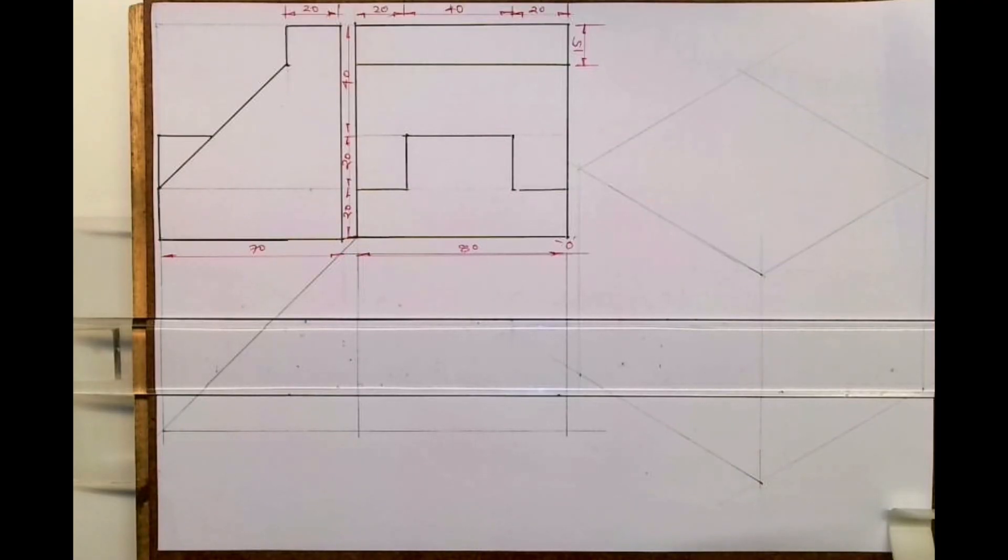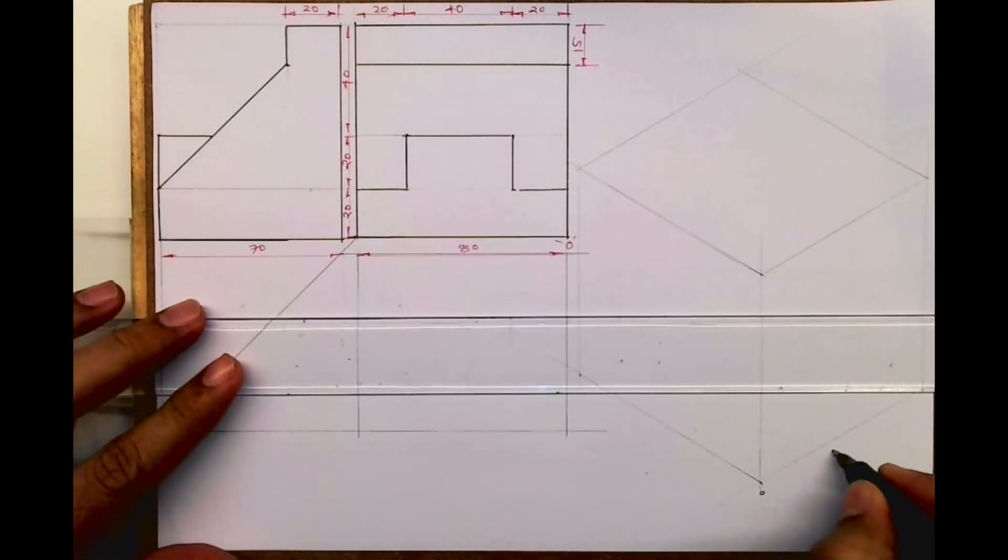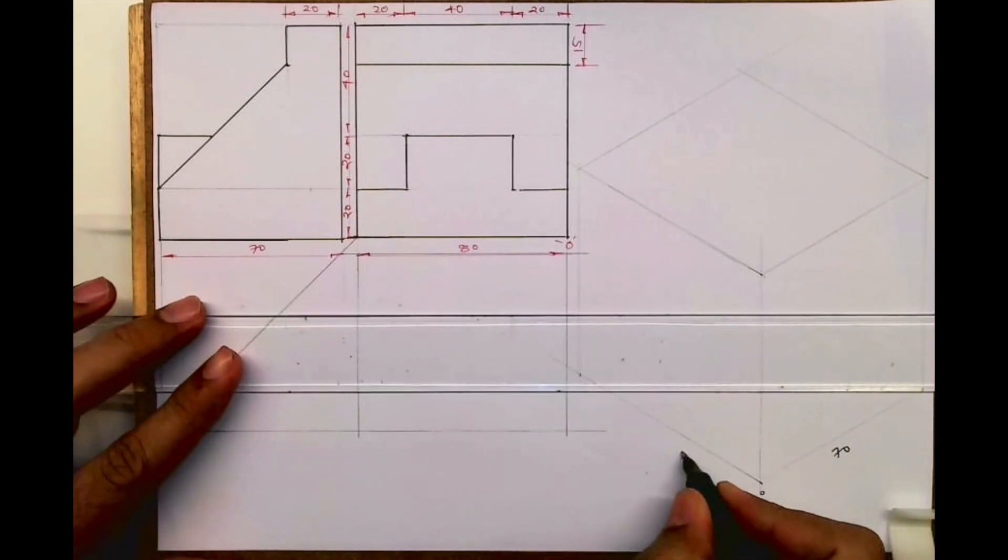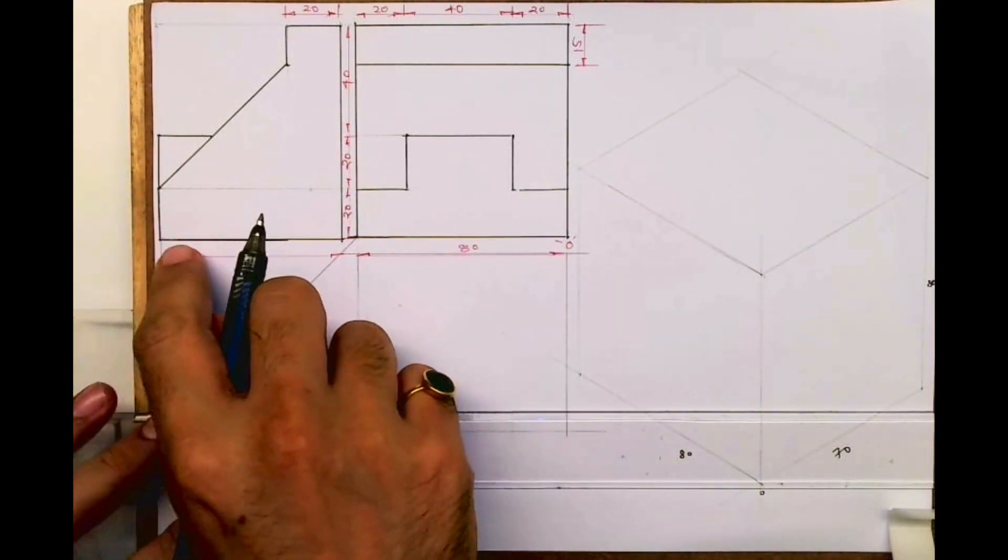Welcome to technical drawing. Today we'll see this sum in isometric. If you see, front view and side view is given. On left side we have to take 80, right side you have to take 70, and height is 80.